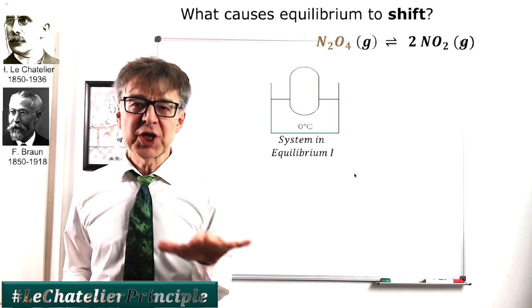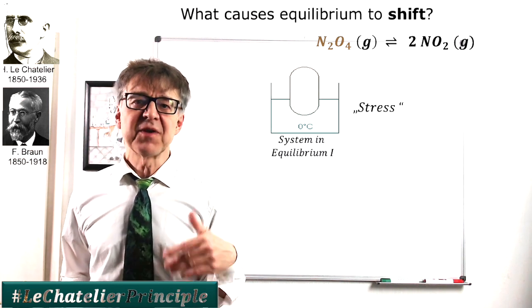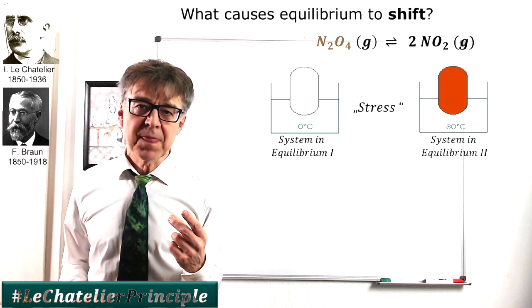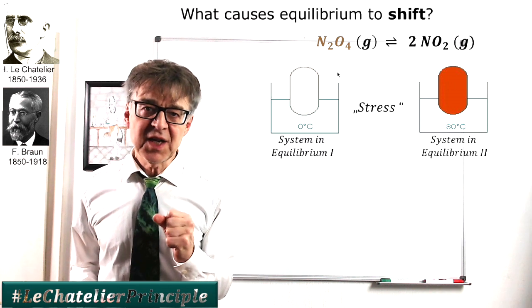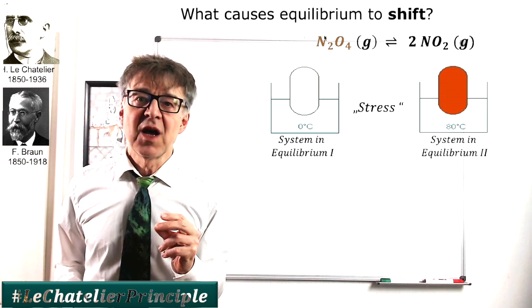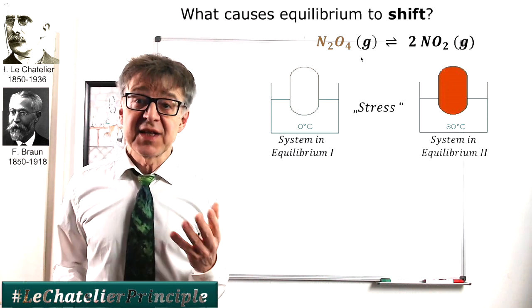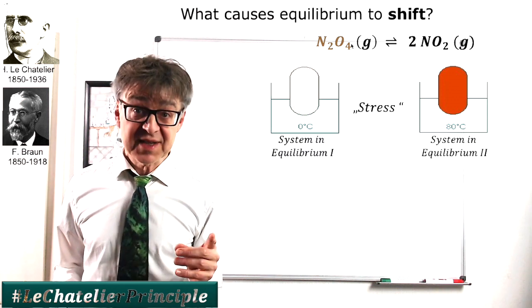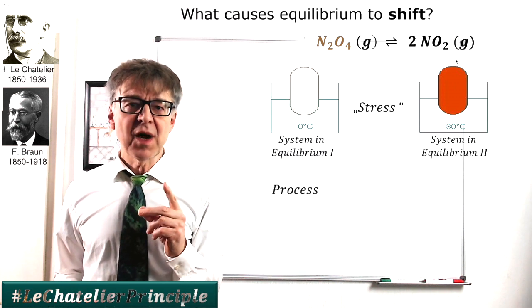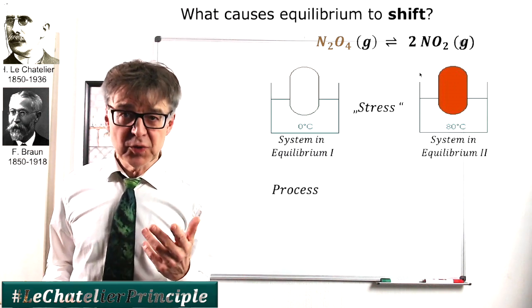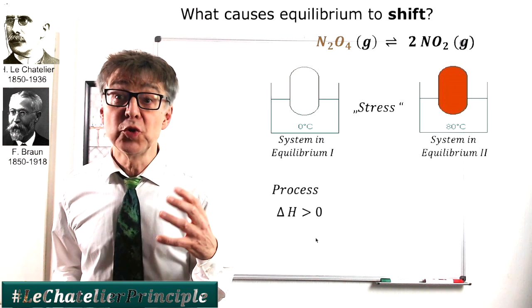It states that if a stress is applied to an equilibrium system, the equilibrium will shift in such a direction that the effect of stress is minimized. The aforementioned equilibrium is easy to detect optically. The color tells us on which side it lies. N2O4 is a colorless gas, NO2 is a brown colored gas. The reaction from N2O4 to NO2 is endothermic, so it consumes heat.